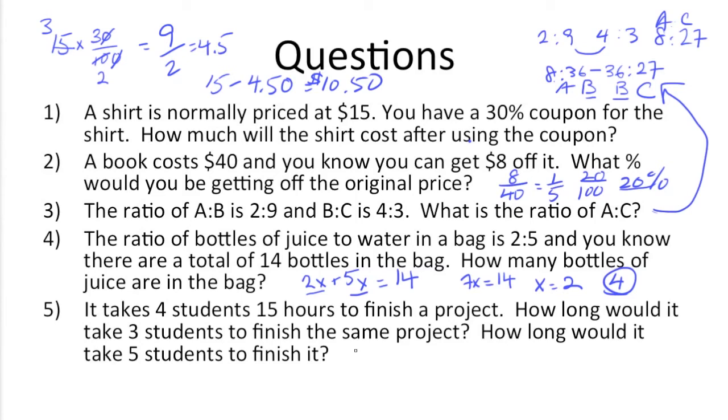So if you remember how to solve those, we need to find the constant. So we take 4 students times 15 hours, which gets us 60. So we know that for 3 students to finish a project, we just take 3 times X, the 3 students times X, which is the number of hours.